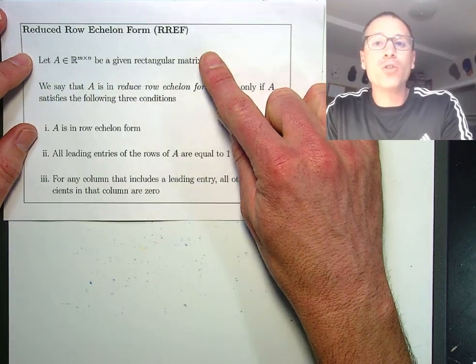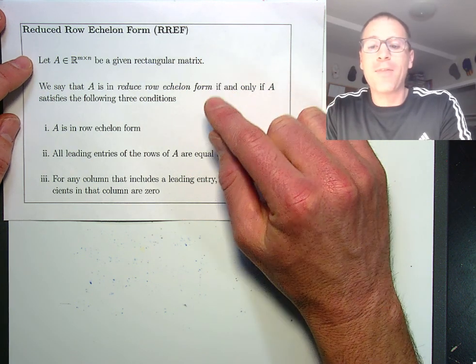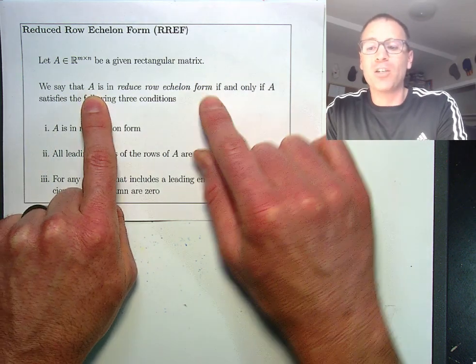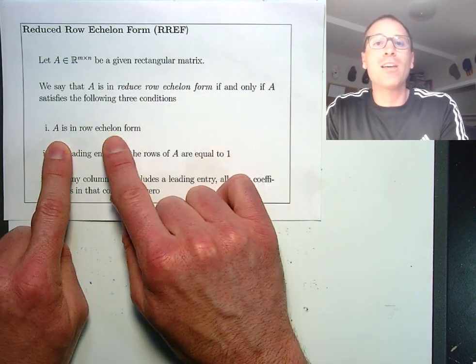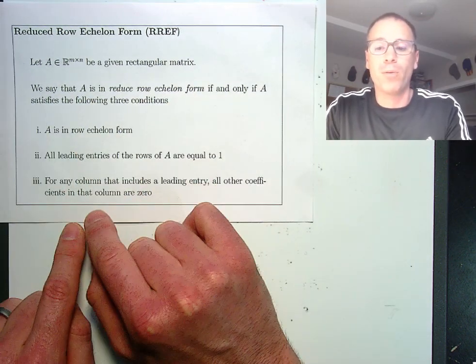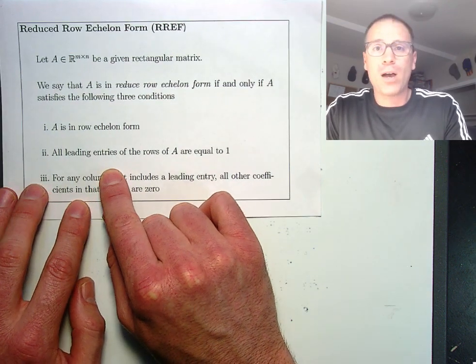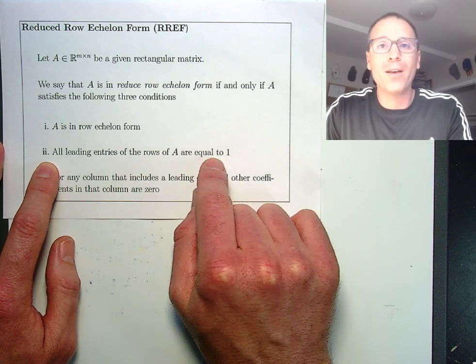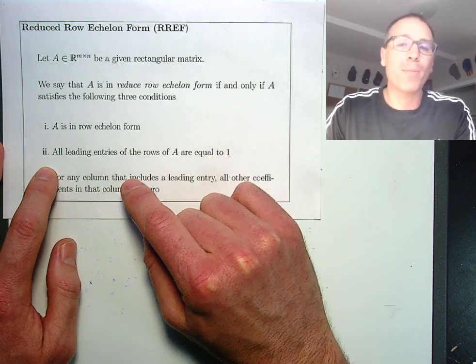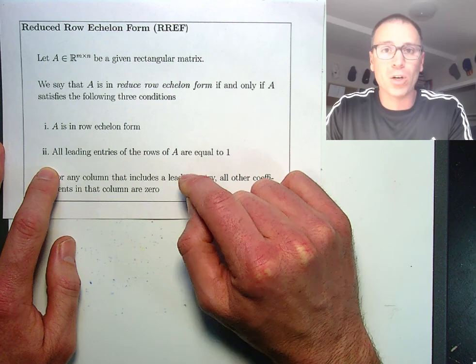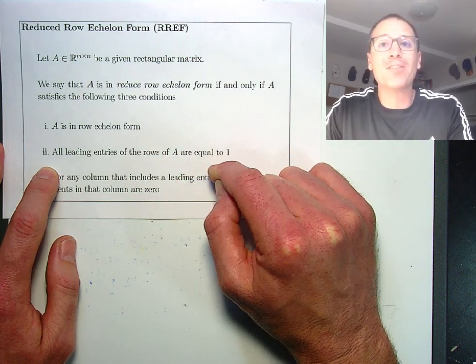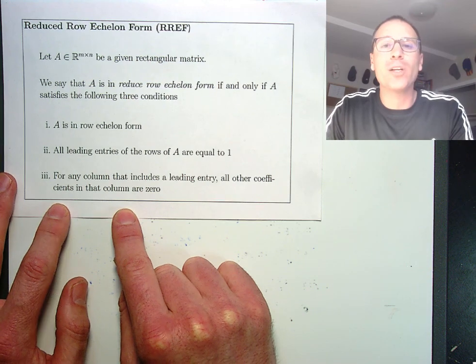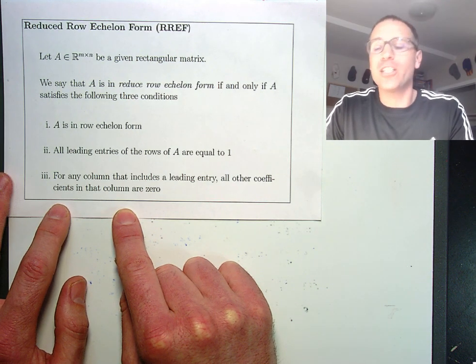For a matrix to be in reduced row echelon form we say that there are three conditions. First we say that a matrix is in reduced row echelon form if and only if it starts in row echelon form. And then the additional assumptions on that matrix are going to be that the leading entries are all equal to one. In row echelon form they can be anything non-zero. In reduced row echelon form they have to be one. And then in any column with a leading entry all other entries are zero.